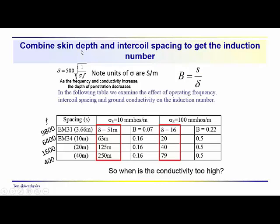So, we want to take a look at these two instruments, the different intercoil spacings, for two ground conductivities here. And then, the idea is that we're going to be calculating the induction number for these different intercoil spacings and operating frequencies. So, the induction number, again, is just the ratio of the spacings, which we have here, to the skin depth, which we're calculating using this relationship.